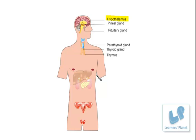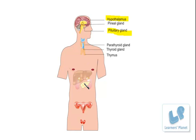Besides controlling other glands, the pituitary gland also secretes hormones required for normal body functioning. For example, the growth hormone — also known as human growth hormone or somatotropic hormone — controls the growth of somatic cells. 'Somato' relates to somatic cells and 'tropic' relates to growth. This hormone controls the growth of muscular cells, bone cells, and so on, resulting in the increase in body size.